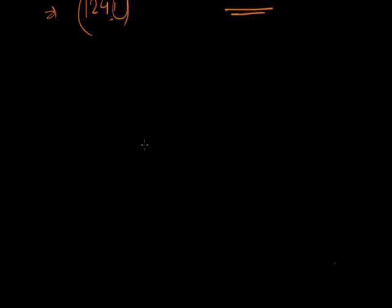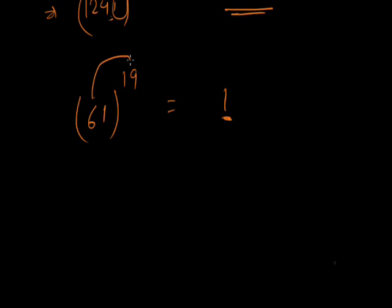For more examples: 61 raised to power 19 — last digit is 1, and the tens digit is 6. Multiply 6 by 9 to get 54, so the last two digits are 51. This is the first concept.